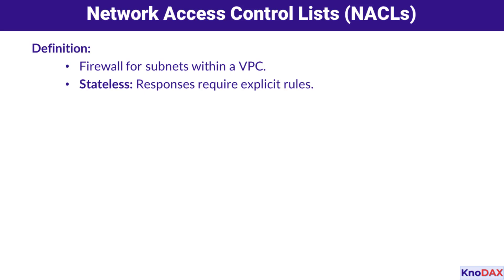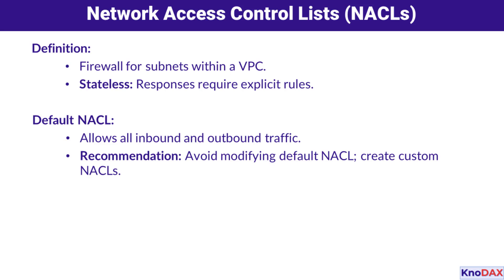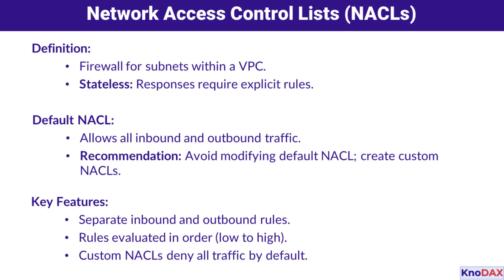Now let's focus on Network Access Control Lists, or NACLs. These operate at the subnet level and provide an optional layer of security for your VPC. NACLs are great for setting coarse-grained controls, such as blocking traffic from a specific IP range or restricting access to a subnet. One unique feature of NACLs is that they're stateless, meaning both incoming and outgoing traffic must match a rule to be allowed. They also evaluate rules sequentially from the lowest to the highest number, so rule number 100 will always take precedence over rule number 200.